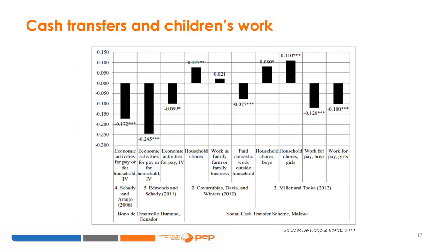The bar graph presents the impact of two different cash transfer schemes on children's engagement with work: the Bono de Desarrollo Humano program in Ecuador and the social cash transfer scheme in Malawi. The effects differ depending on the types of work considered. Overall, cash transfers reduce children's engagement with paid work outside of the home in both Ecuador and Malawi. This is due to the income effect—the increase in family income means there is less need for children to contribute. At the same time, children increase time spent on domestic chores, which is the case for girls and boys in Malawi. This can be explained by the substitution effect: the cash transfer may increase productive activities among adults such as trading on the market, requiring children to do more household chores.